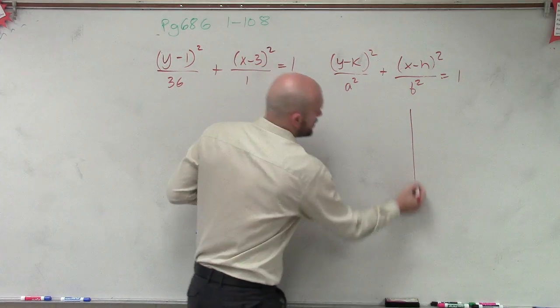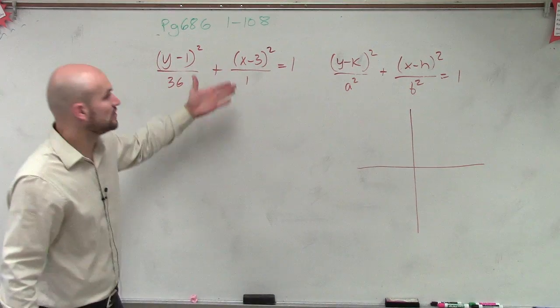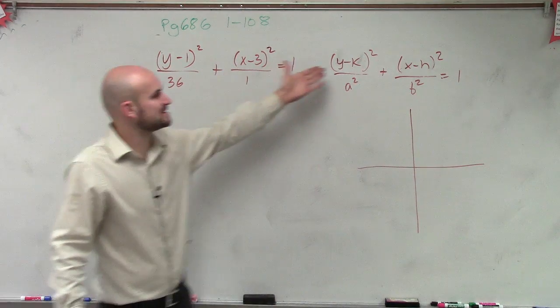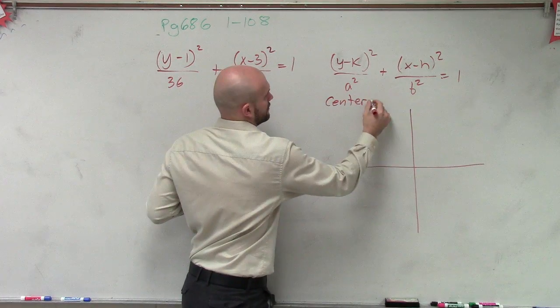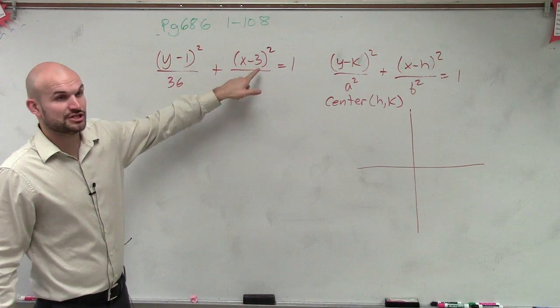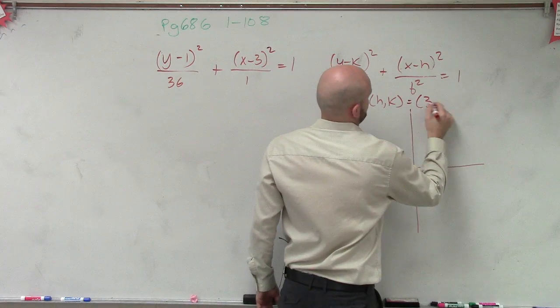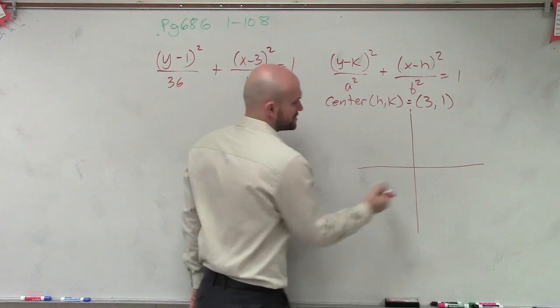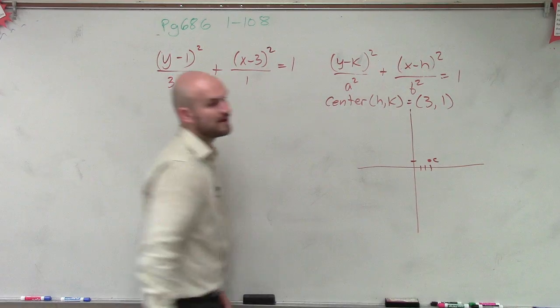So let's go ahead and figure out what important parts do we need to know. The first one is determining the center. Remember the center is H comma K. So in this case, when you look at your formula, H is three, K is one. Because remember, it's always the opposite. So let's go over three, one, two, three, up one. So now I found my center.